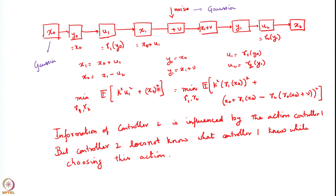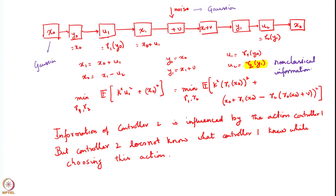The problem is to minimize a quadratic cost. The challenge here is that u2, unlike in the classical information pattern, is being chosen as a function of y1 alone, and u1 is a function of y0 alone. In a classical information pattern, u2 would be chosen as a function of both y1 and y0 — the second controller would have access to the information that the first controller had. But that is not the case here. This is the non-classical information pattern or information structure.